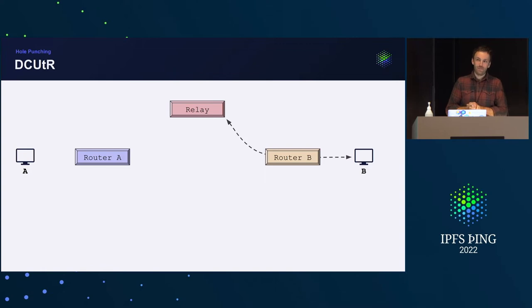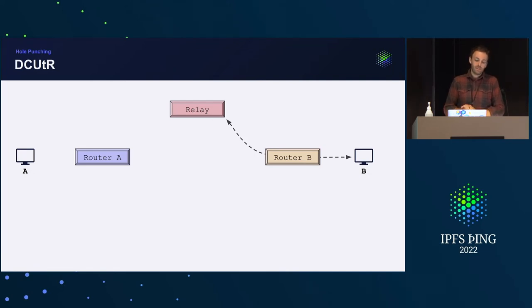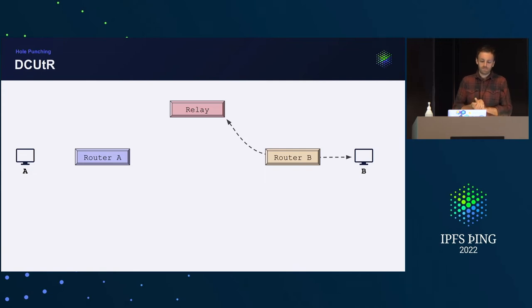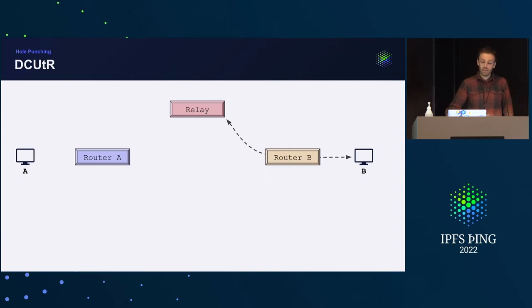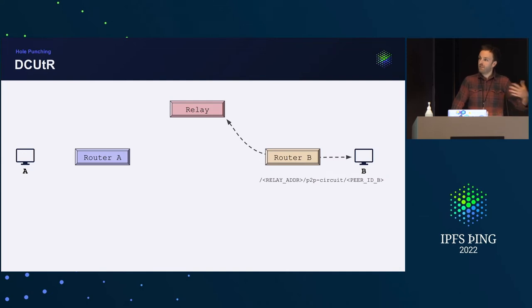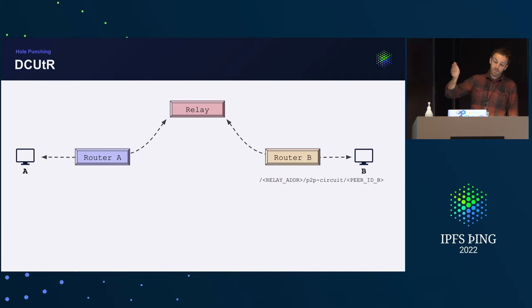The relay itself is just another Kubo node. Since Kubo 0.11, all Kubo nodes are so-called limited relays. A limited relay only allows a certain amount of resources to be shared — around four megabytes of bandwidth — and only a couple of protocols are allowed, but this is more than enough. Peer B searches for any limited relay, gets a reservation, and receives a multiaddress that is passed to peer A through some other means.